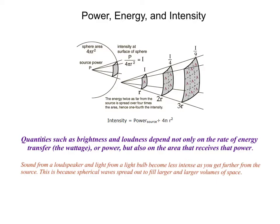So quantities such as brightness and loudness depend not on the rate of energy transfer, not on the wattage or the power, but also on the area that receives that power. The terms brightness and loudness refer to a wave's intensity. In general, a wave's intensity decreases as the area on which it acts increases or if its power decreases, which means the intensity is directly proportional to power and indirectly proportional to the area on which that wave acts.